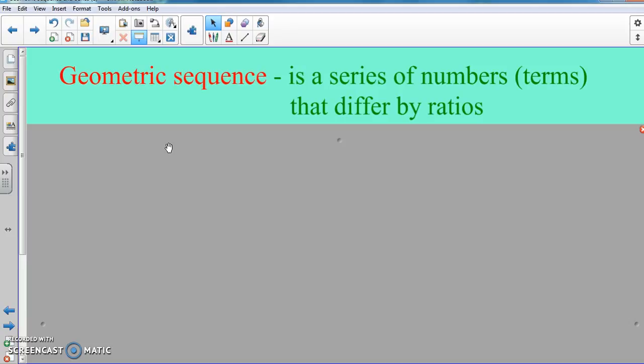Now the biggest part here, those keywords, is differ by ratios. So it is a series of numbers or terms that differ by ratios. Now in order for it to be a geometric sequence, it has to have a common ratio to go from the first term to the second term, from the second term to the third term, from the third term to the fourth term, and so forth. It has to be the same number that you're using to get from the first to the second, second to third.